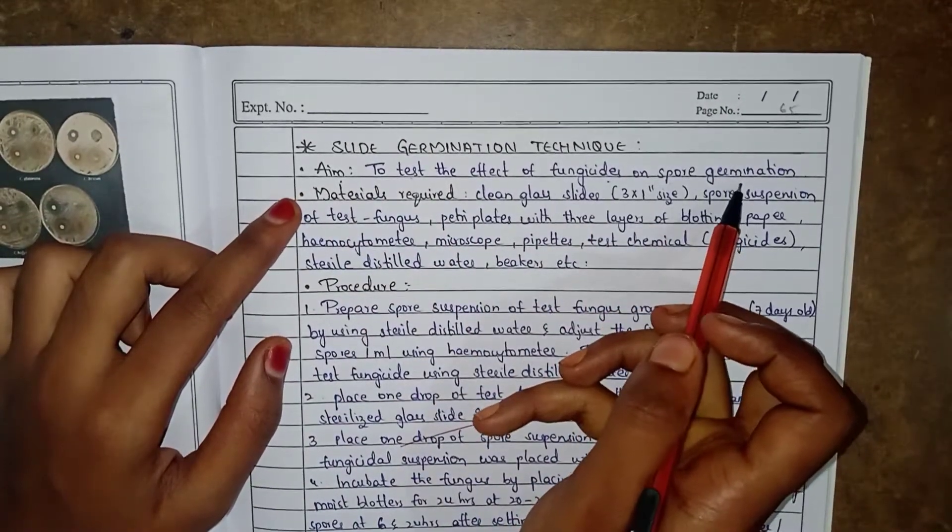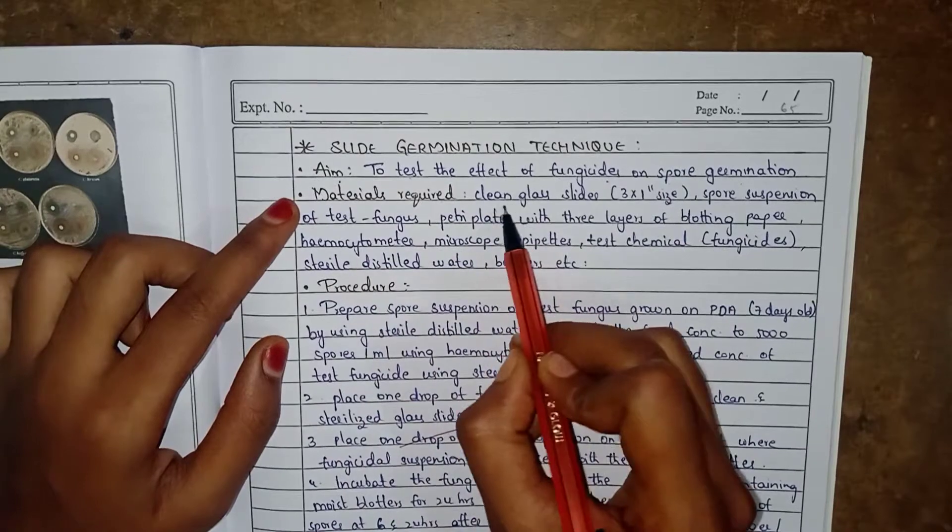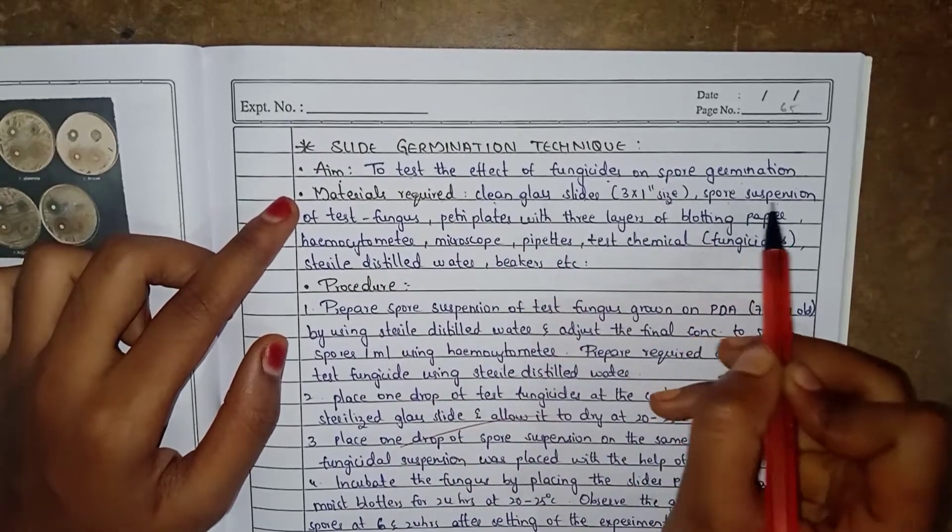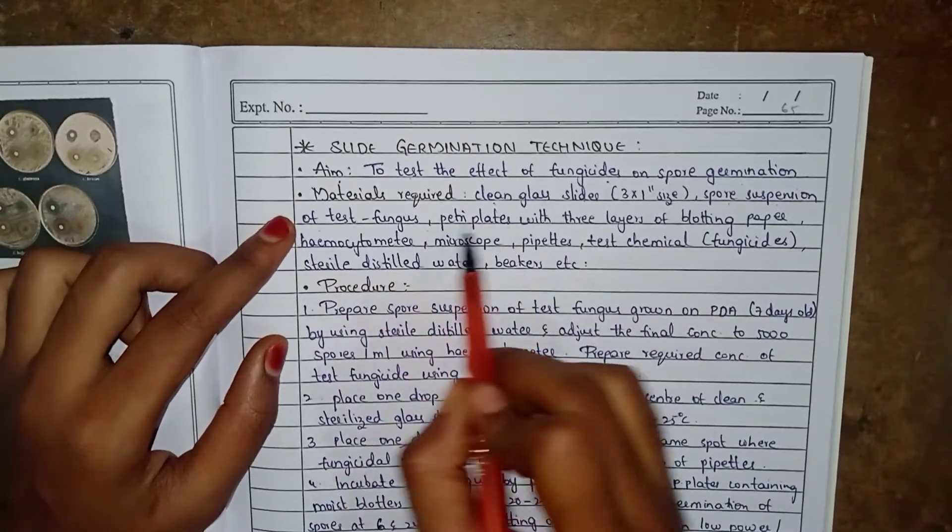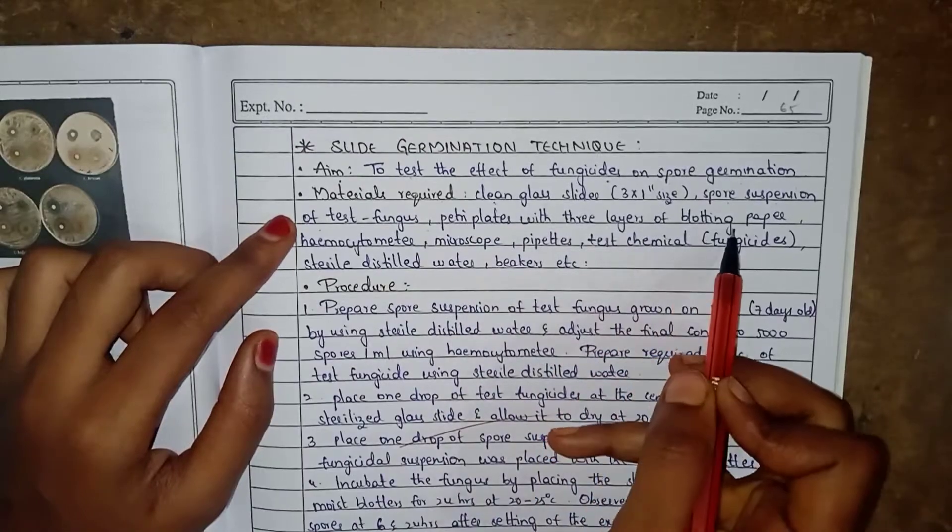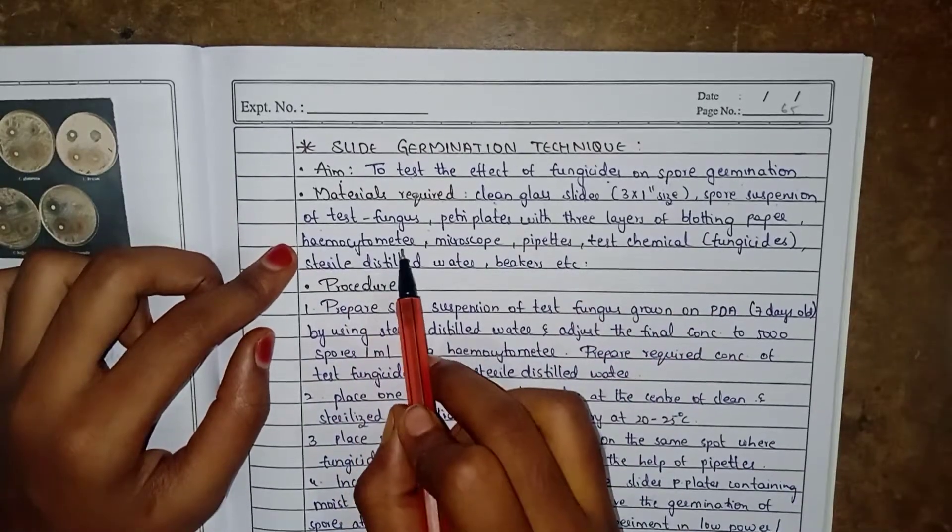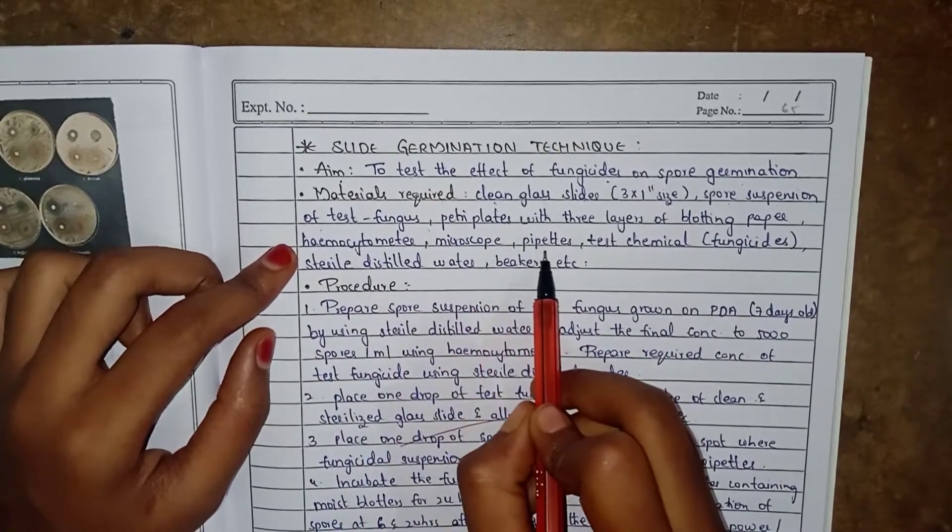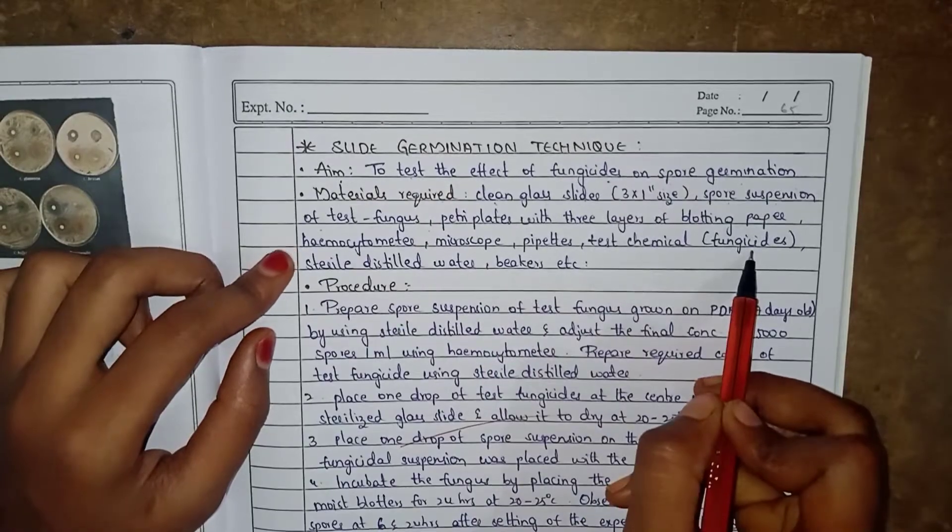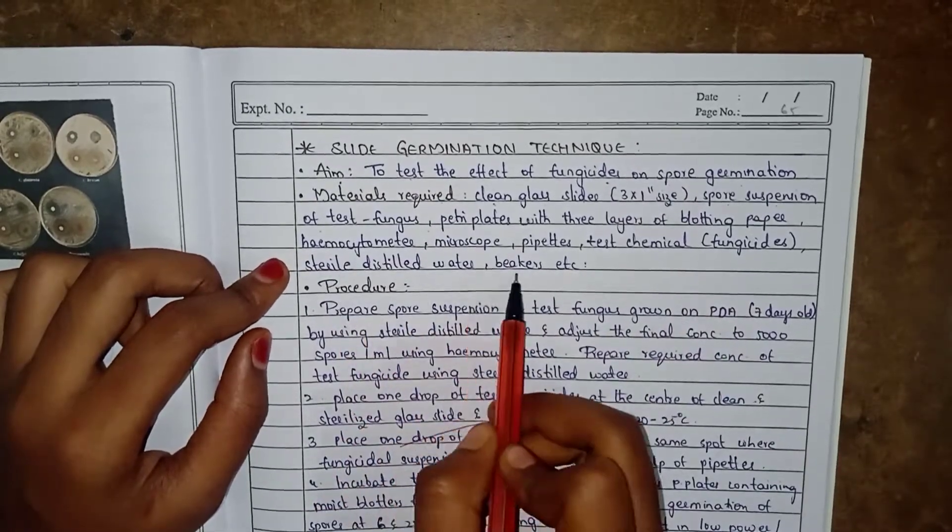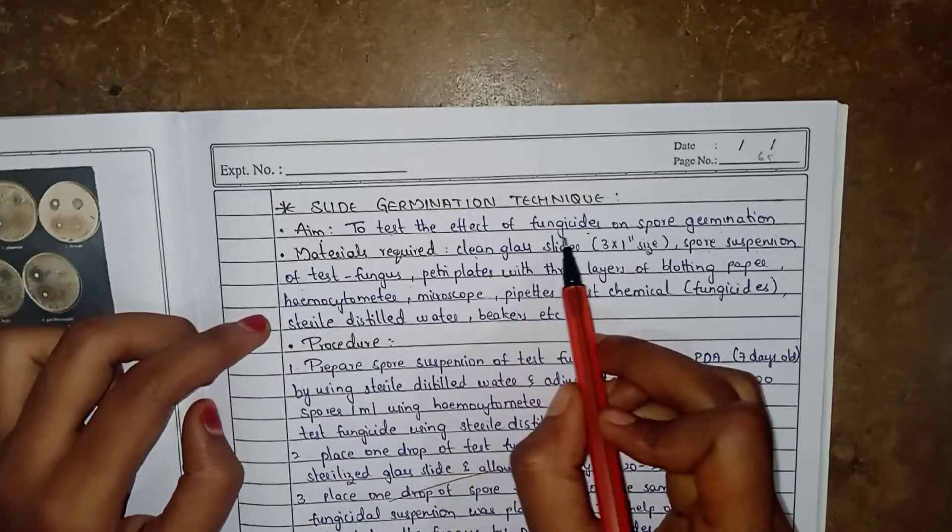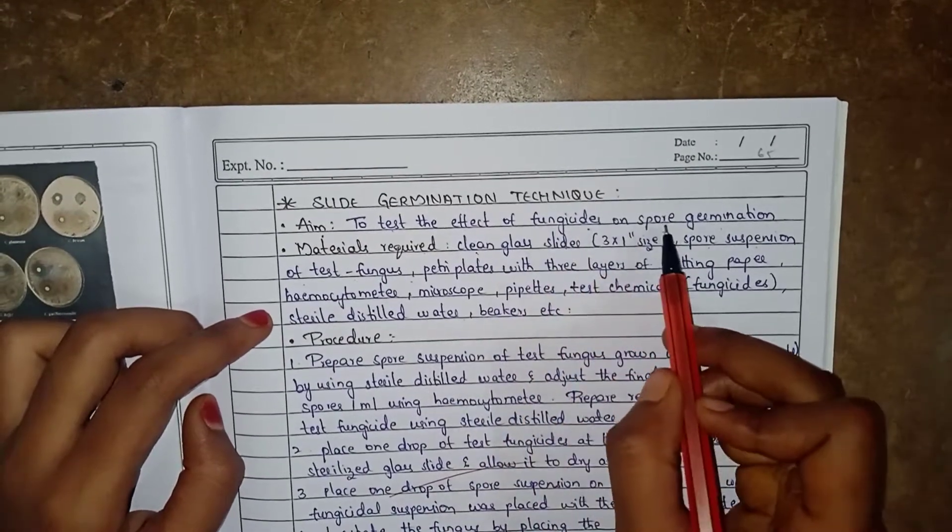Materials required: clean glass slides, spore suspension of test fungus, petri plates with three layers of blotting paper, hemocytometer, microscope, pipettes, test chemical that is fungicides, sterile distilled water, beakers, etc.